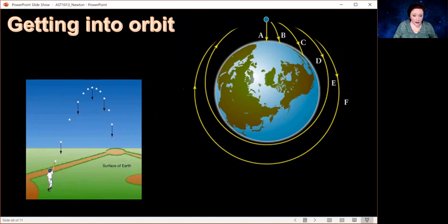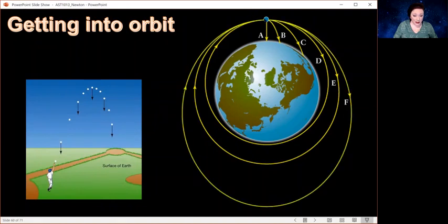If I push it a little harder still, now it's going to go around on this line F, and it's going to be an elliptical orbit. If I push it even harder, I can make it escape from Earth altogether.